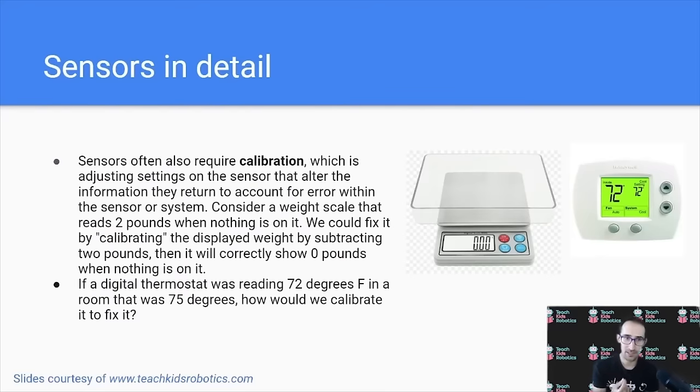Finally, sensors often require calibration, which is when the sensor is reading a value that differs from the actual value in the real world. Consider, for example, a weight scale that reads two pounds when nothing is on it. We would need to calibrate this weight scale by subtracting two pounds from all of its readings so that it would correctly show zero pounds when nothing is on it.